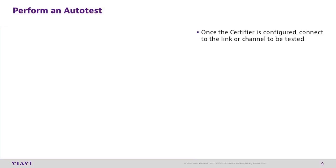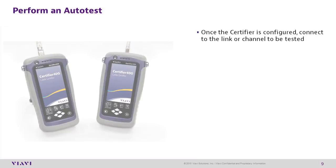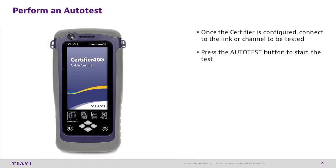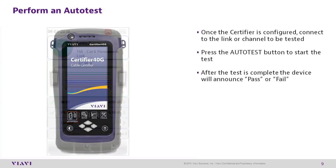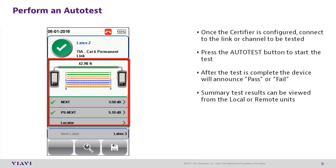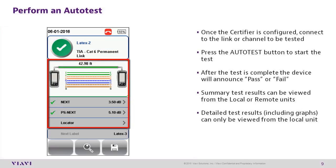Performing an Auto Test. Once the certifier is configured, connect to the link or channel to be tested and press the auto test button to start the test. After the test is completed, the device will display pass or fail. A summary of the test results can be reviewed from the local or remote unit, but detailed test results such as graphs can only be viewed on the local unit.